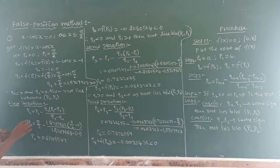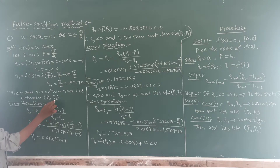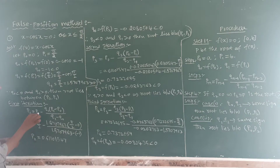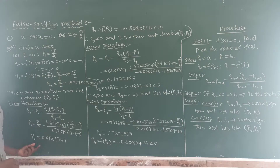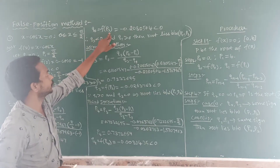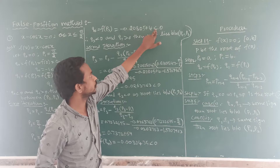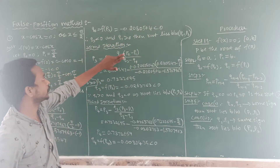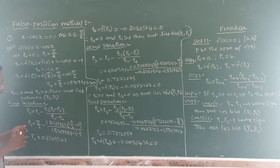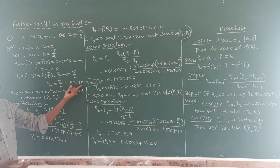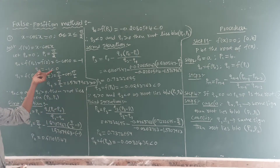The first iteration gives us: P2 = P1 − Q1 × (P1 − P0) / (Q1 − Q0). Substituting all the values for P1, Q1, and P0, we get P2. Now we find Q2, which is f(P2). F(P2) is not equal to 0, so it is negative — Q2 is negative.